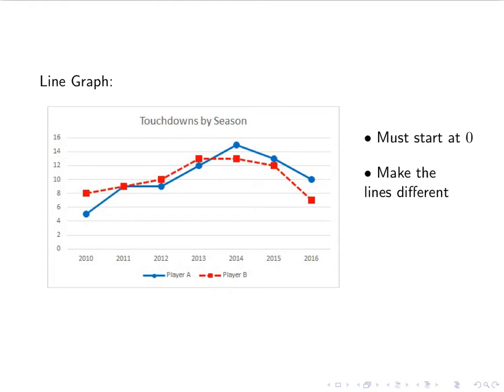Another thing is that when you have multiple lines, so hopefully you can see we have two lines here. Make them different. If you have different colors, that's fantastic. If not, make the lines themselves different. So if you notice the blue line is solid, the red line is dashed. And also make what are called the markers different. So the markers for the blue, which is player A, are circles. And the markers for the red, player B, are squares.